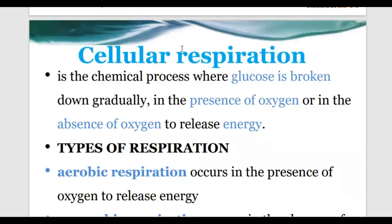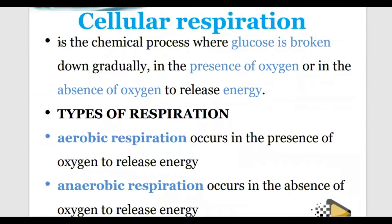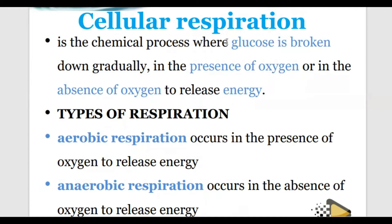Cellular respiration is a process whereby glucose is broken down gradually in the presence of oxygen, or in the absence of oxygen, but both will produce what we call energy. So the major purpose of this respiration is to produce energy. This process is basically a chemical process, meaning it involves chemicals for this process to take place.